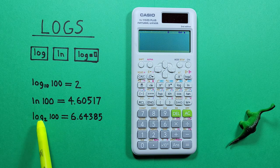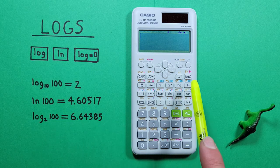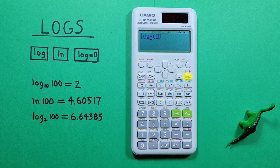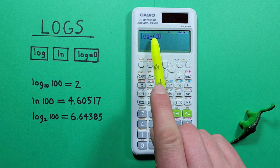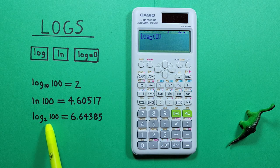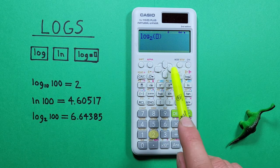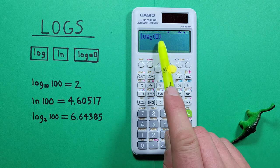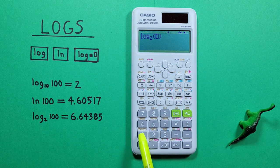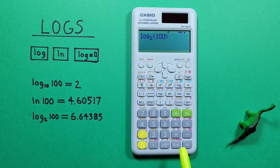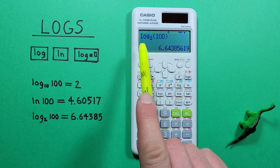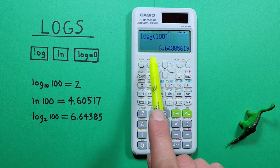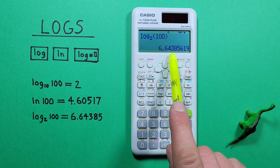So if we have log base 2 of 100, we hit that key and now we see two boxes here. The first box is where we enter our base, so for our example that's 2, and then scroll over to the next box and we enter our 100 and press equals. And we get a result of log base 2 of 100 is equal to 6.64385, etc.